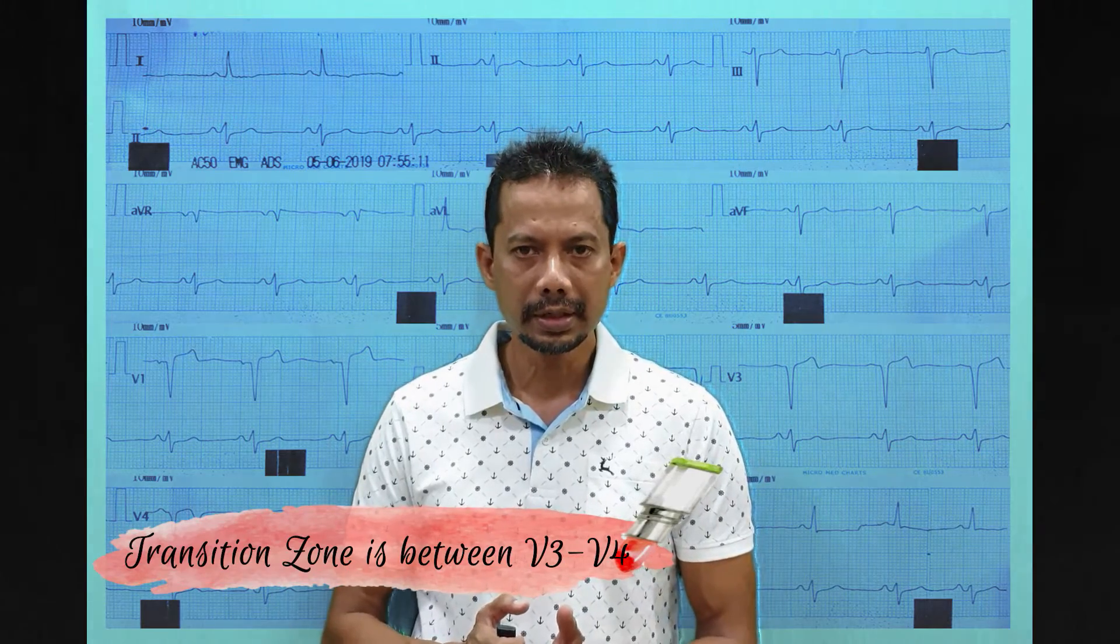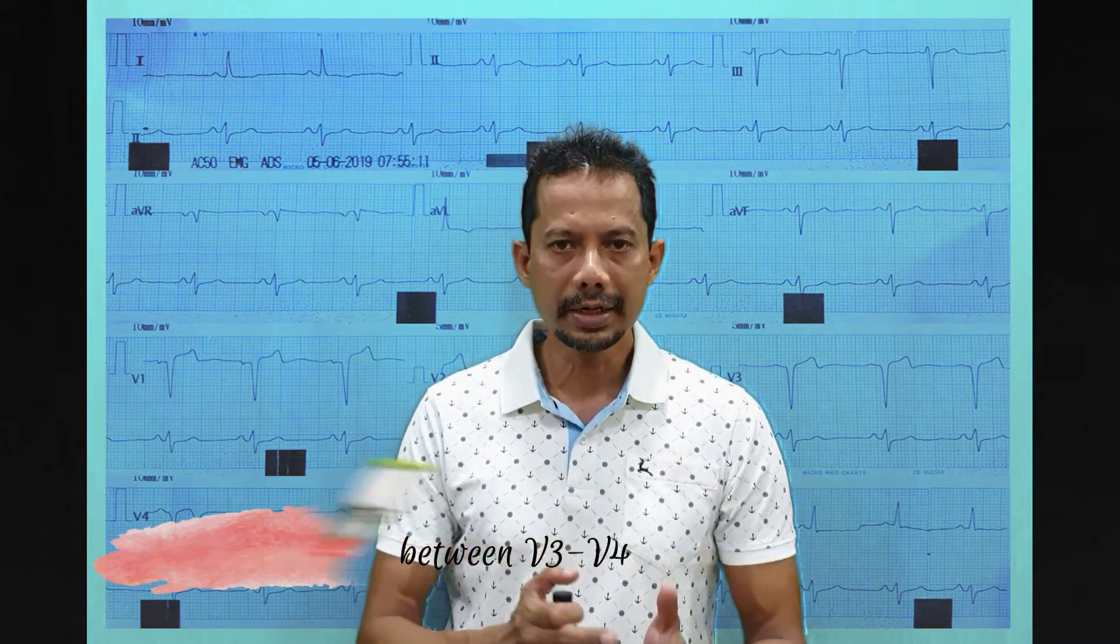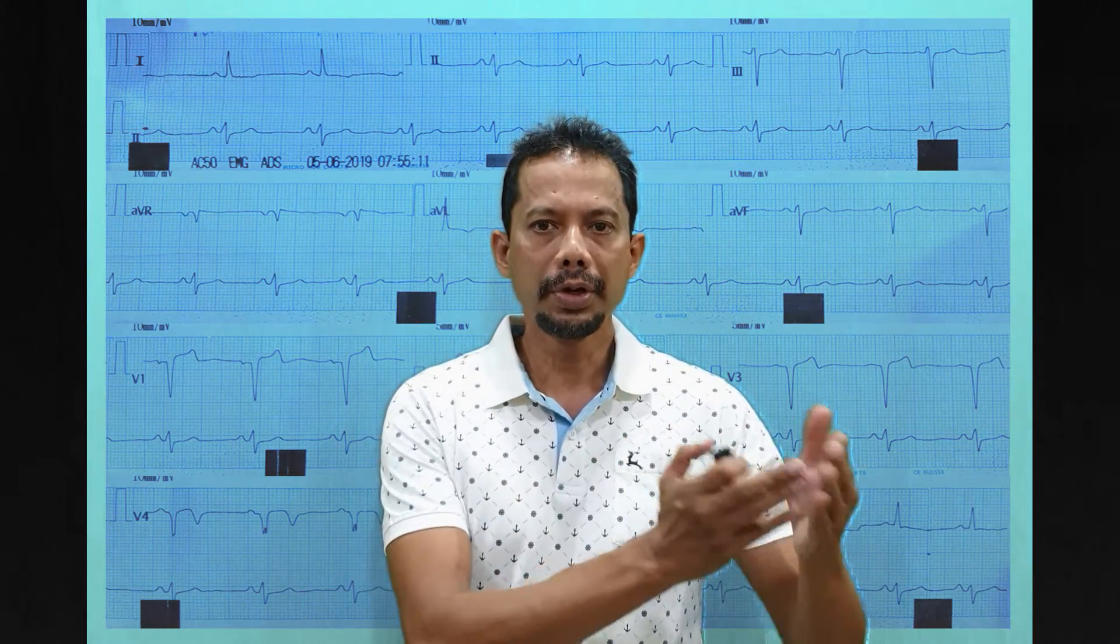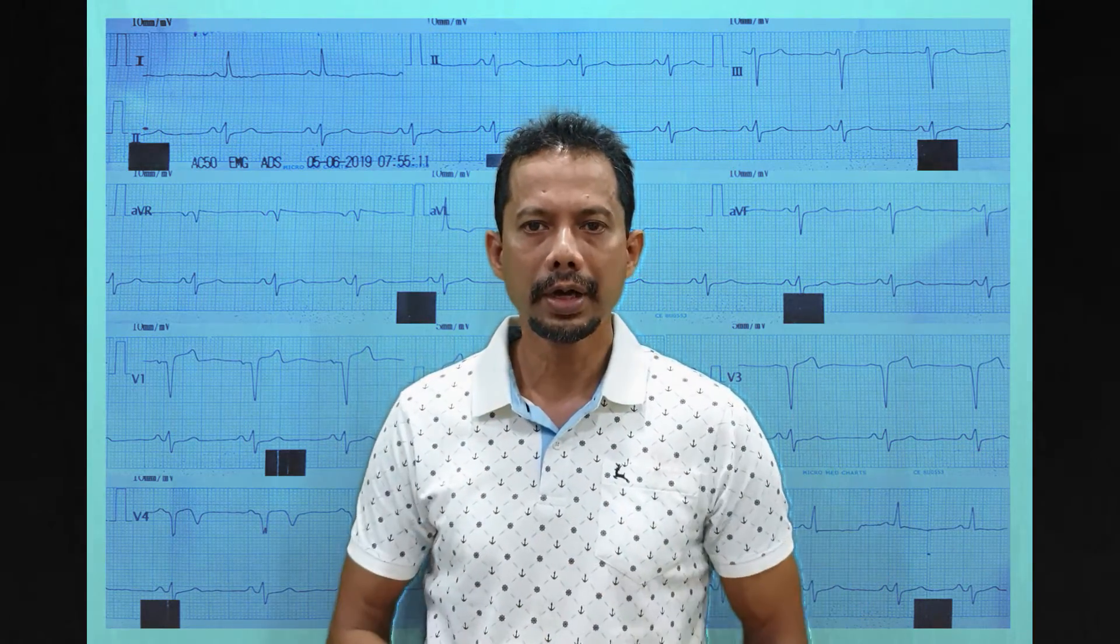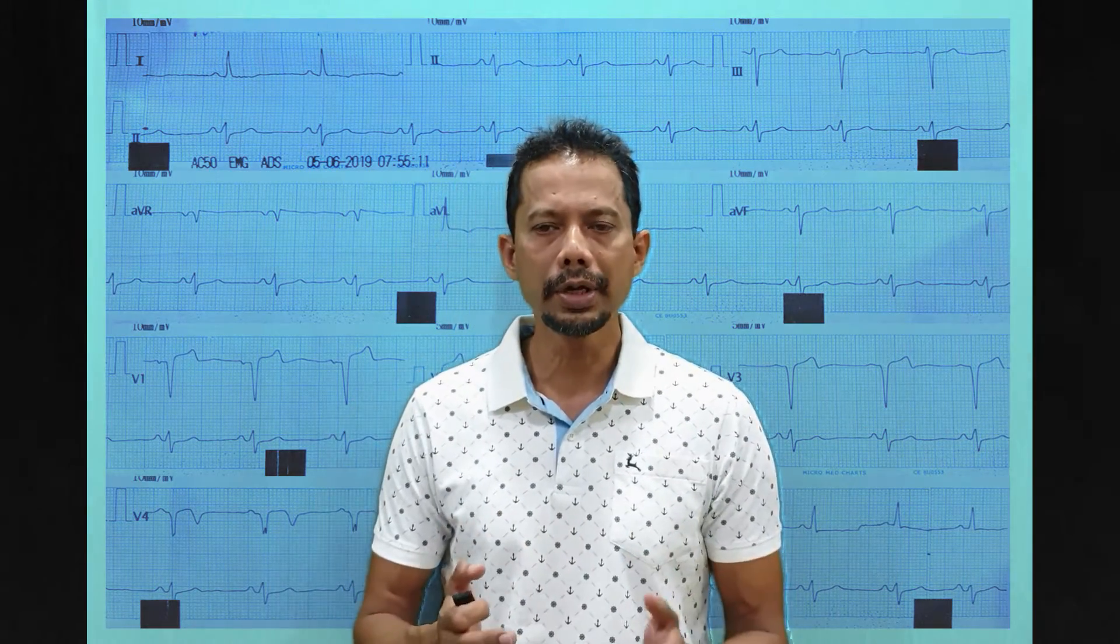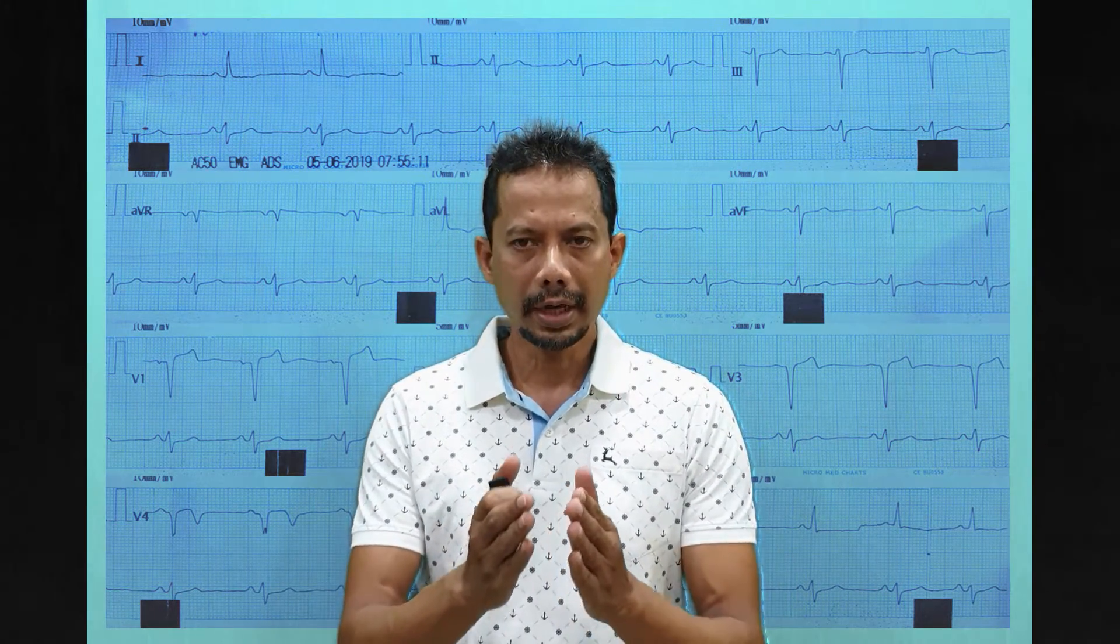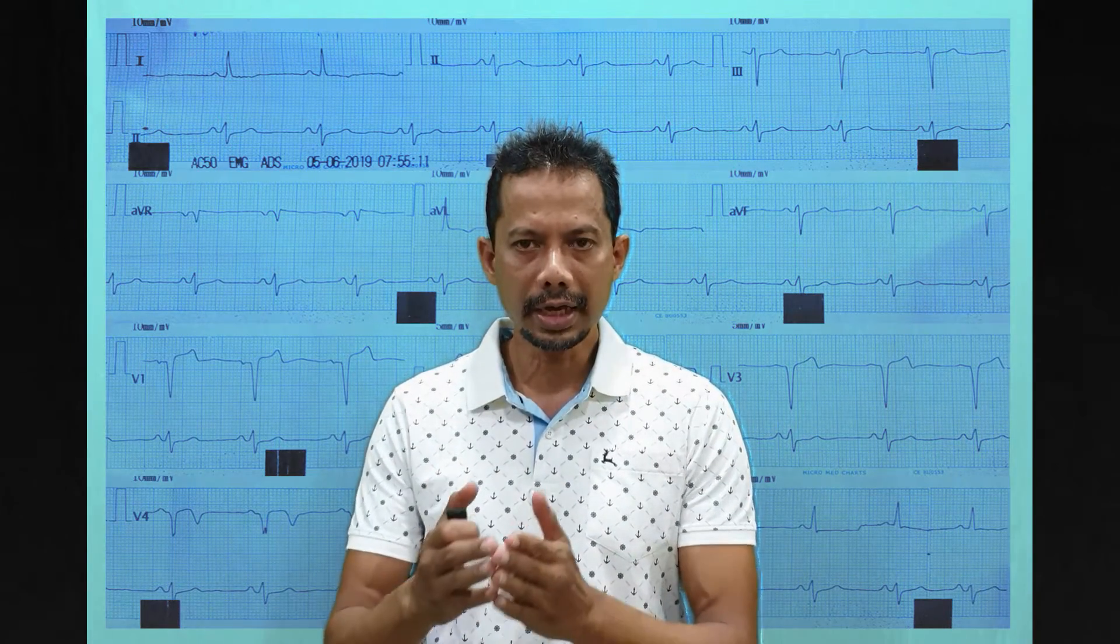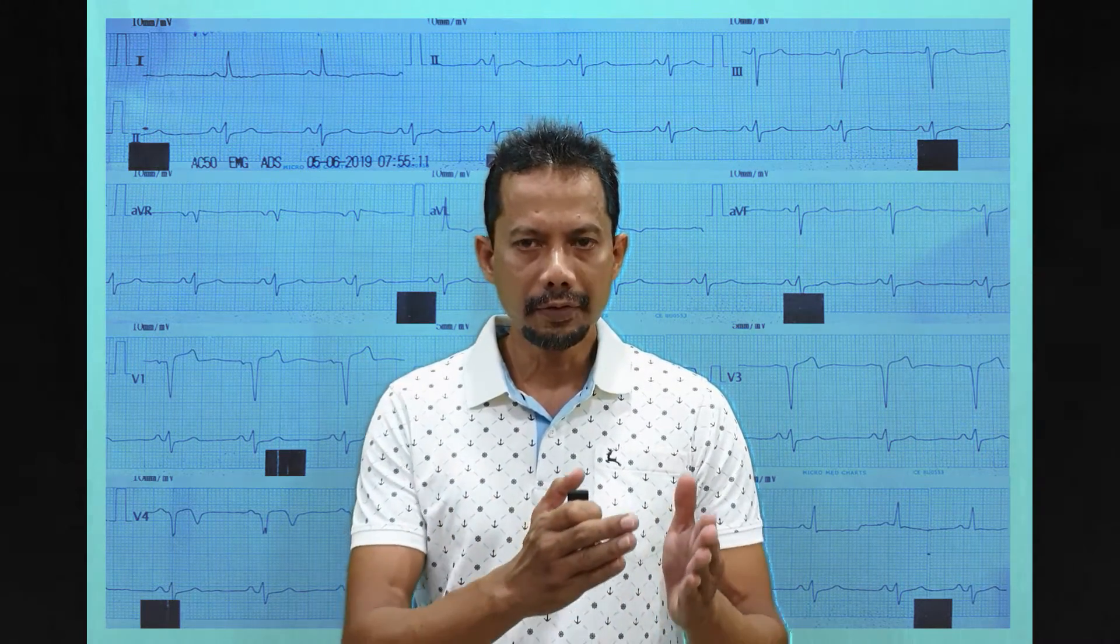We'll discuss some cardiac conditions in which the transition zone will move beyond V4 or before V3. Transition zone is a zone where the R wave becomes taller than the S wave, and that usually is between V3 and V4.